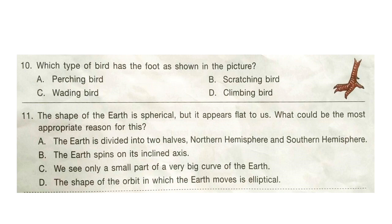Question 11: The shape of the earth is spherical but it appears flat to us. What could be the most appropriate reason for this? Options are: A — the earth is divided into two halves, northern hemisphere and southern hemisphere; B — the earth spins on its inclined axis; C — we see only a small part of a very big curve of the earth; D — the shape of the orbit in which the earth moves is elliptical. The correct answer is option C.